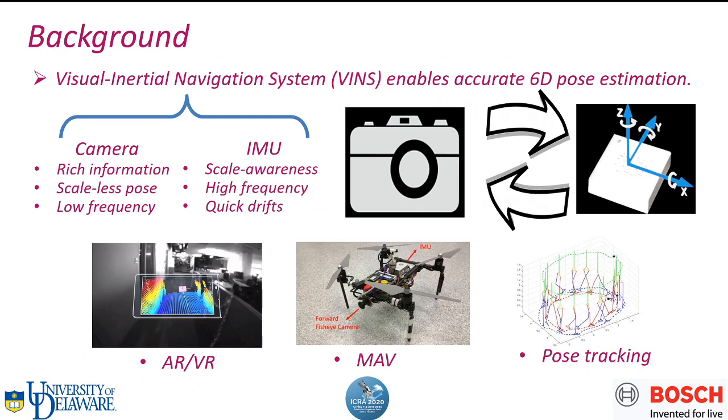Camera can provide rich information of the environment, but it can provide only scale-less poses. IMU can recover the motion scale with relatively high frequency, but it drifts fast. By combining camera and IMU, Visual Inertial Navigation System enables accurate 6DOF pose estimation.